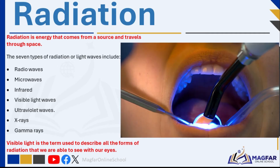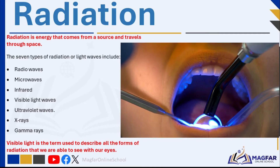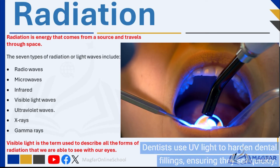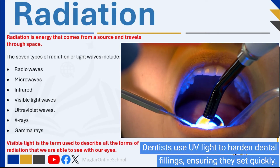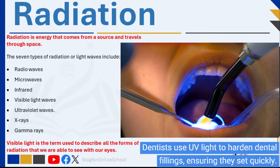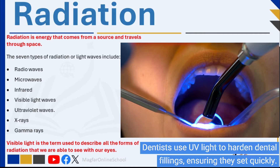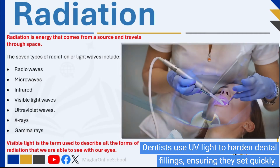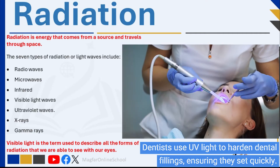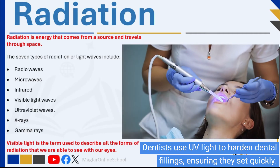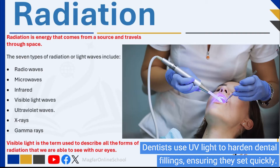Ultraviolet waves are light waves responsible for tanning and burning of the skin when exposed to the sun. This is because these light waves are able to penetrate the skin.